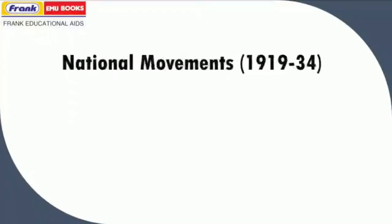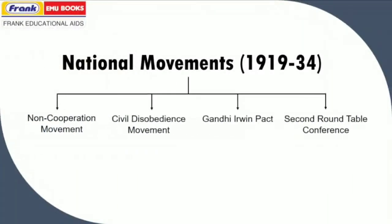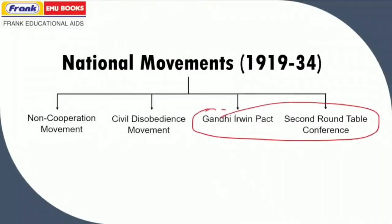In this video, we are going to analyze the national movements which took place between 1919 to 1934. We will be starting with the non-cooperation movement, followed by the civil disobedience movement, and these two important events which are the Gandhi-Irwin Pact and the 2nd Roundtable Conference of 1931.